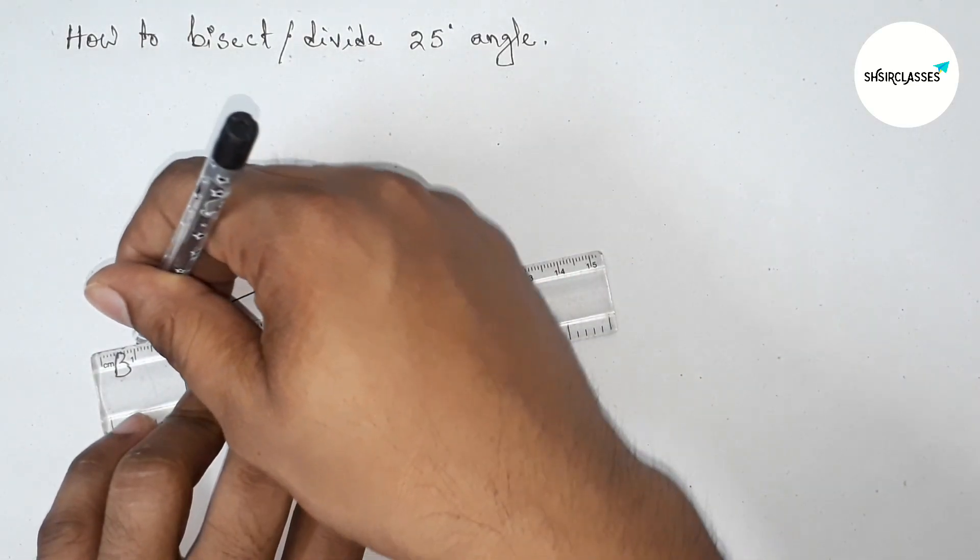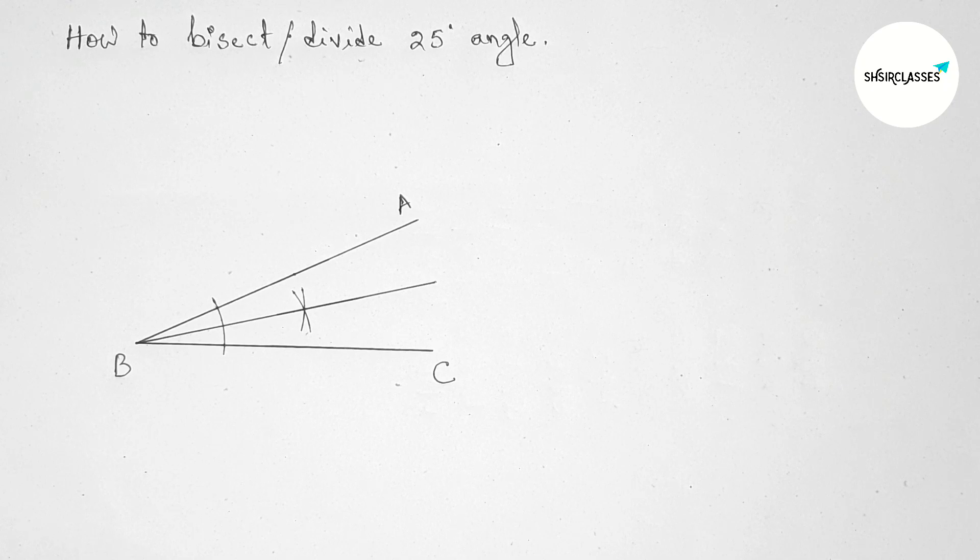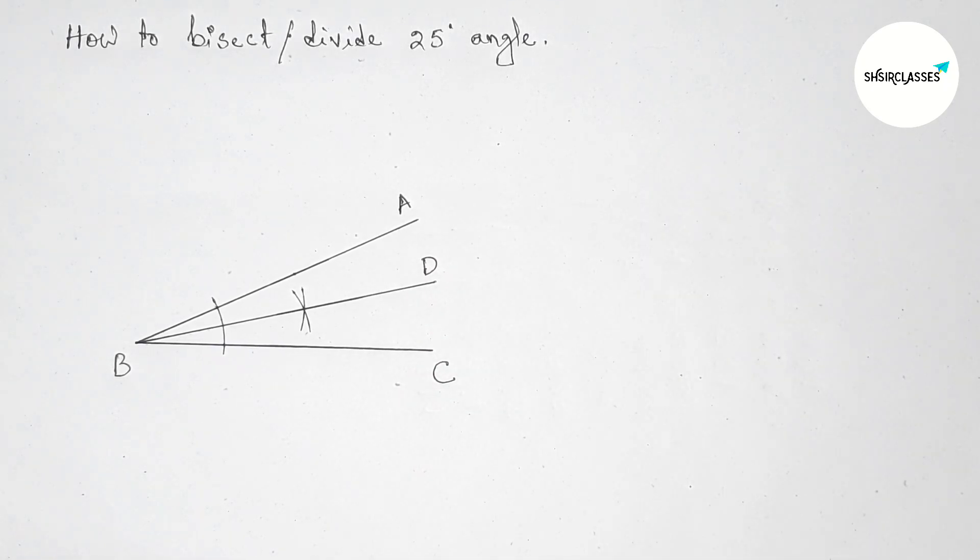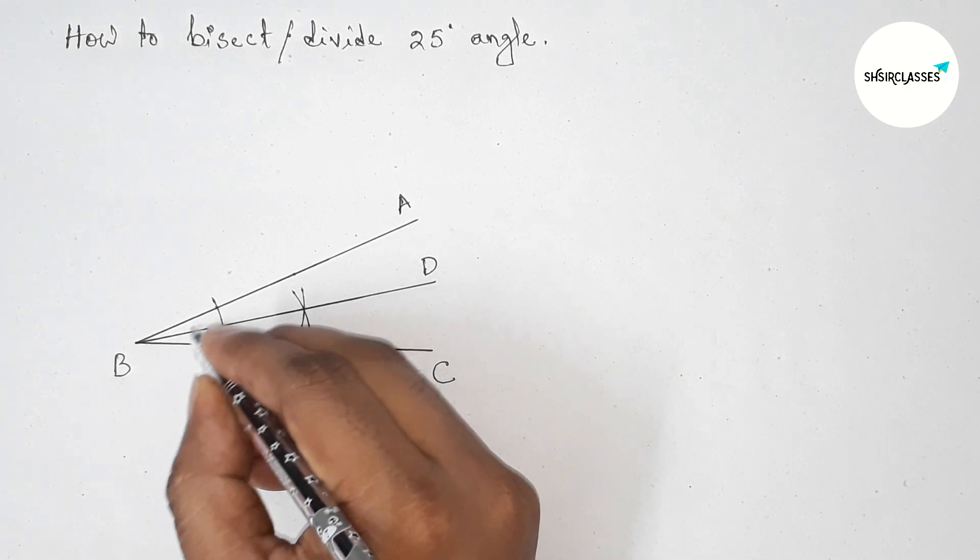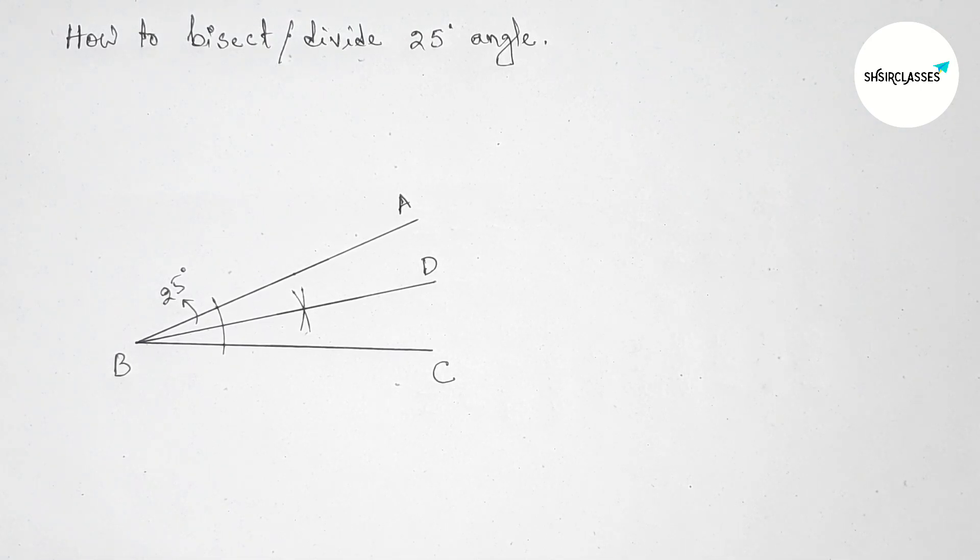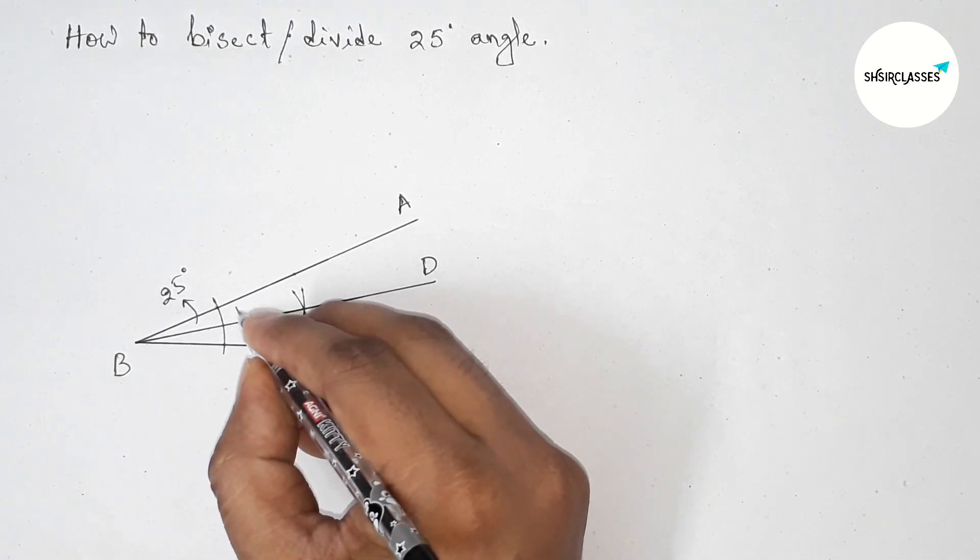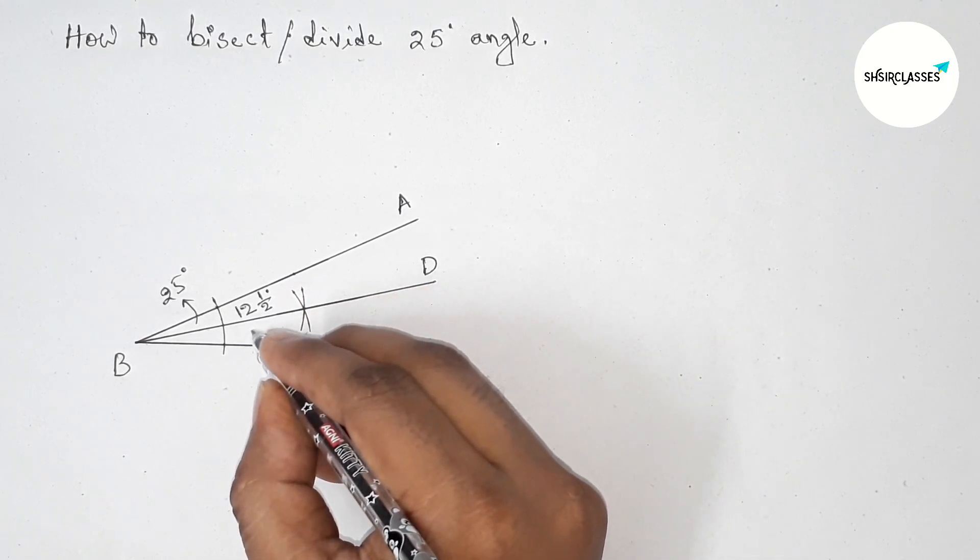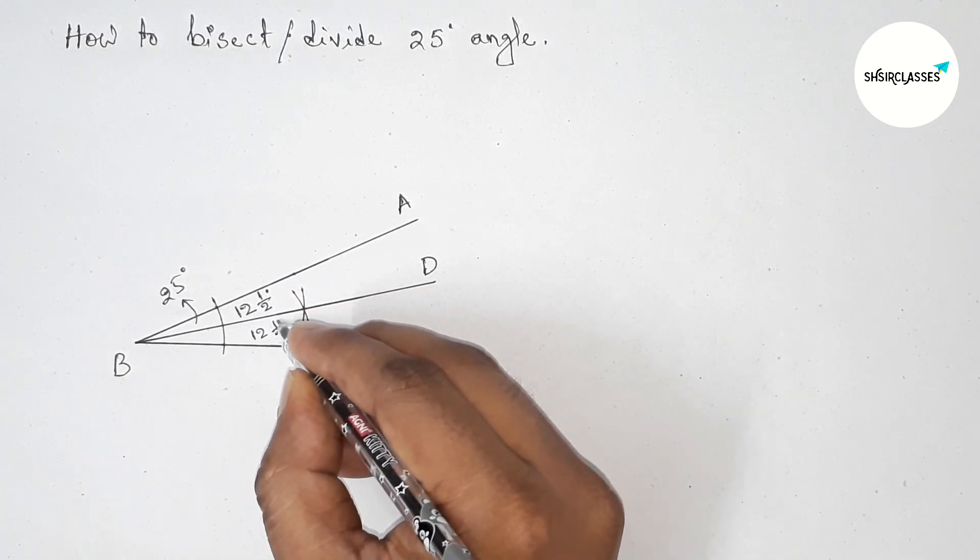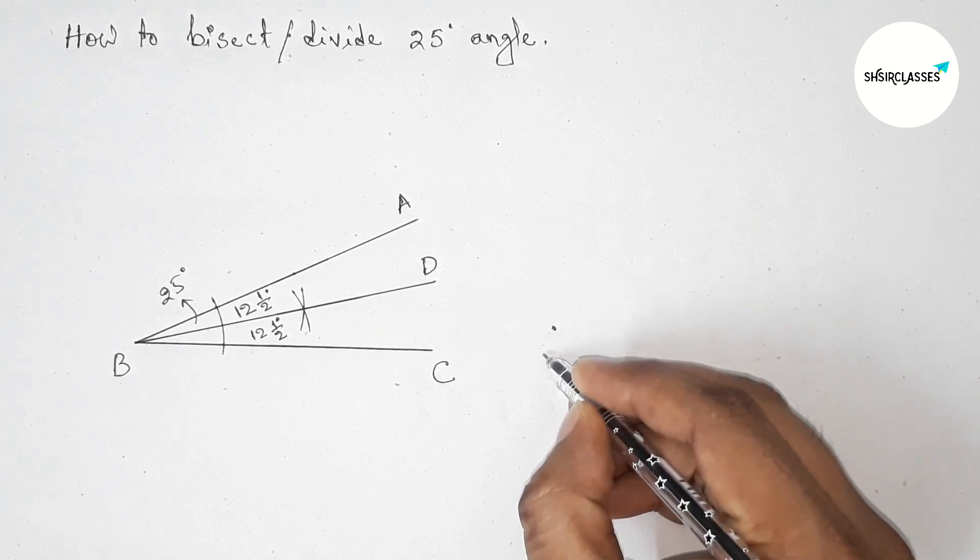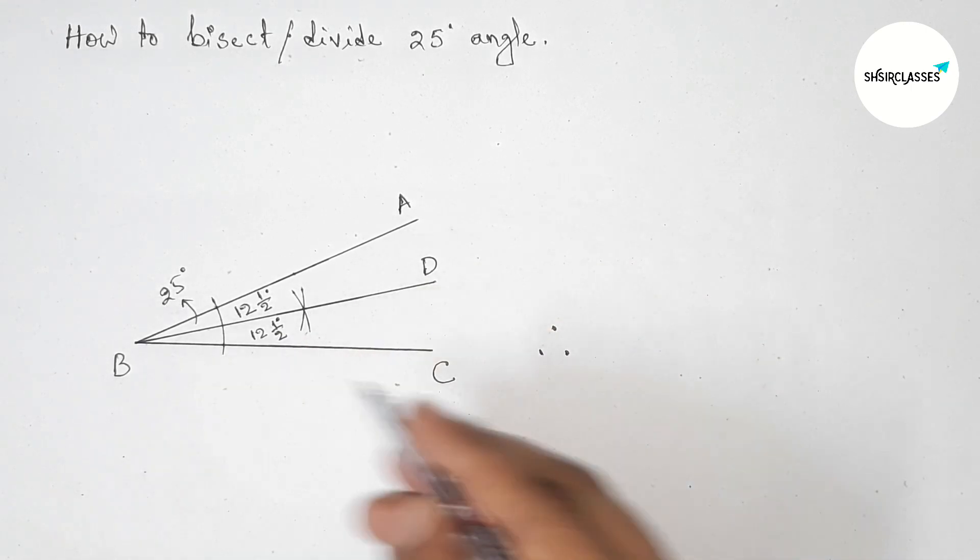Now joining this line. So now taking here point D. Okay, so angle ABC is divided into two equal parts. So here this is 25 degrees, and this one is 12.5 degrees and this one is 12.5 degrees. These are all mixed fractions.